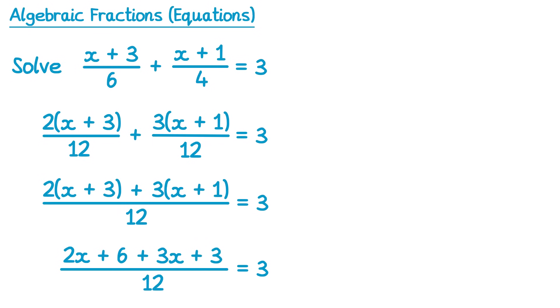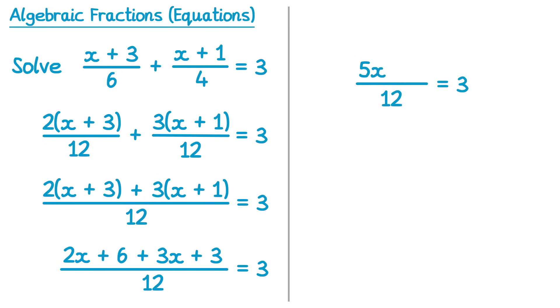We can now tidy up that numerator a bit by collecting like terms. So if we write the over 12 and equals 3, we've got 2x and 3x, that adds to make 5x. And then we've also got a 6 and a plus 3 which gives you 9. We've now turned this into a relatively straightforward equation to solve. We can multiply both sides by 12 to get rid of that fraction. If you multiply by 12 on the left you get 5x plus 9. And if we multiply by 12 on the right, 3 times 12 is 36.